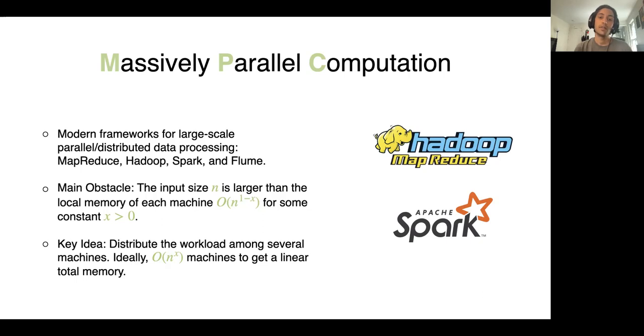A key feature of MapReduce framework is that we can solve problems with input size n using machines that have sublinear local memory, for example n^(1-ε). The idea is to distribute the workload among these machines, ideally using n^ε machines so that the total memory is linear.